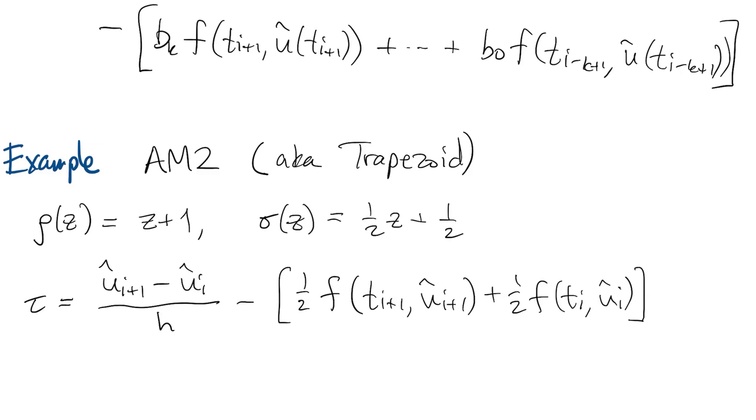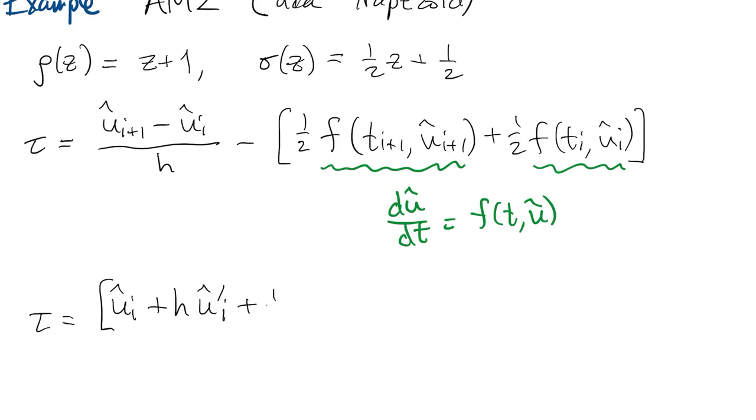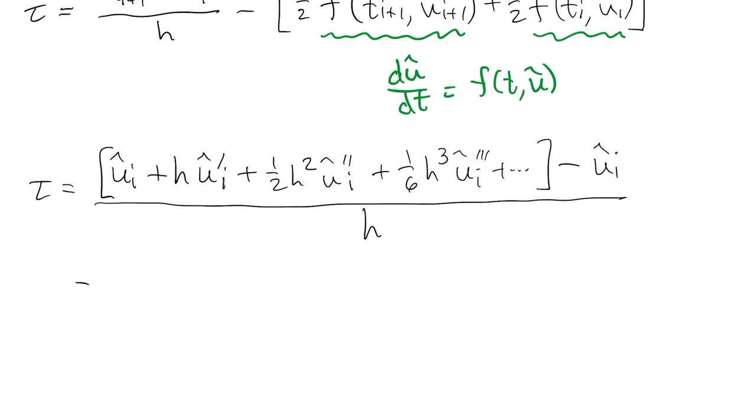So we can write out what tau is for this method. And the trick here is to get rid of these f's by using the fact that u-hat solves the differential equation. So the derivative of u-hat is equal to f, so we'll replace the f's by u-hat primes. If we expand everything in the first term around time ti, we get this mess.